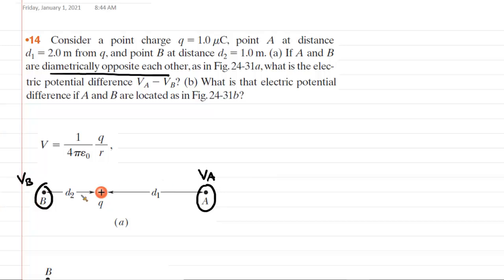These electric potentials are being set up or produced by a point charge, which we have labeled Q, and so we need to know the equation that gives us the electric potential as the result of a point charge Q. That is this equation right here.